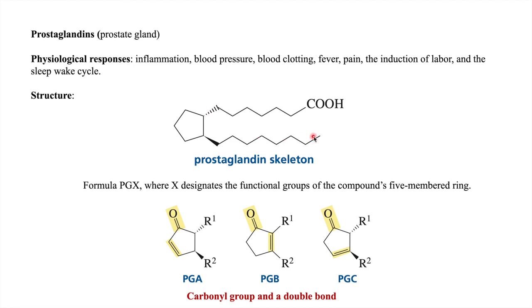And another chain is an 8-carbon chain. So this is the basic structure of prostaglandin.